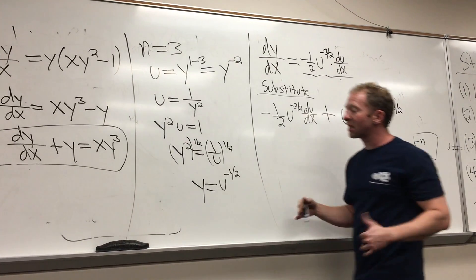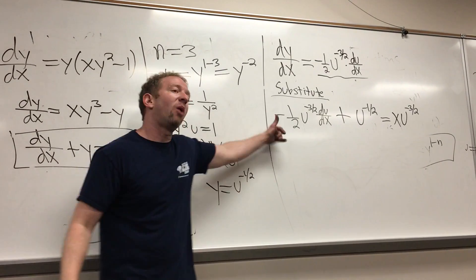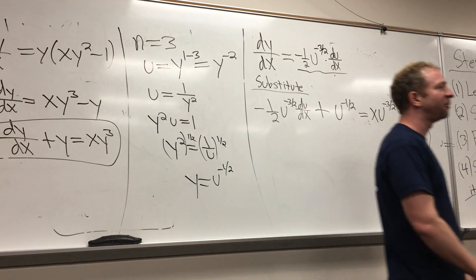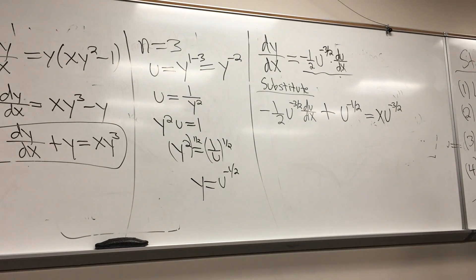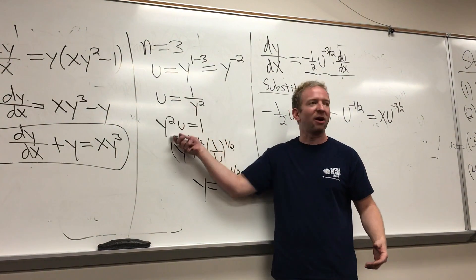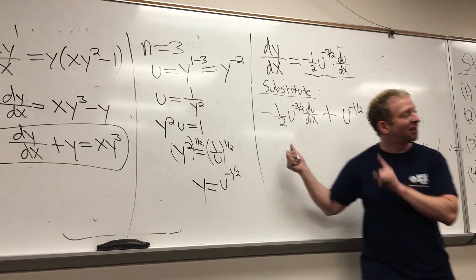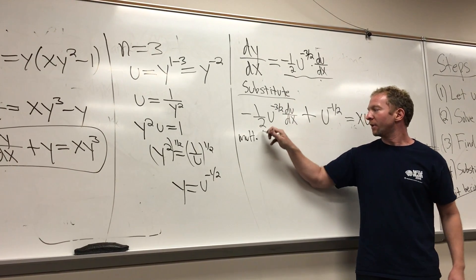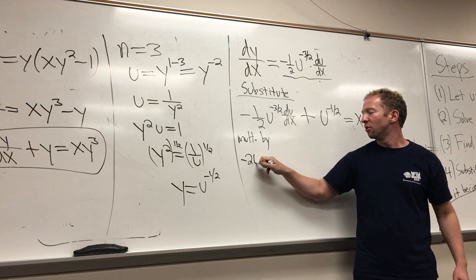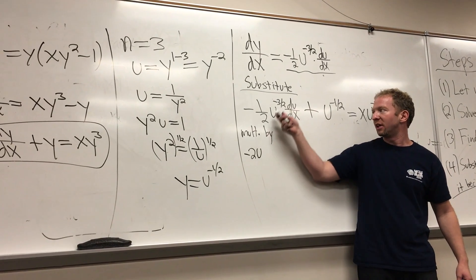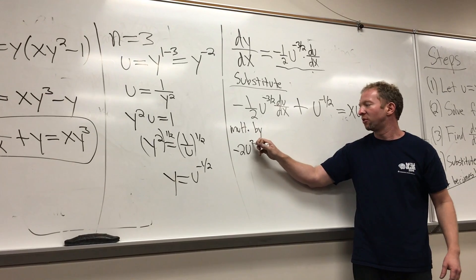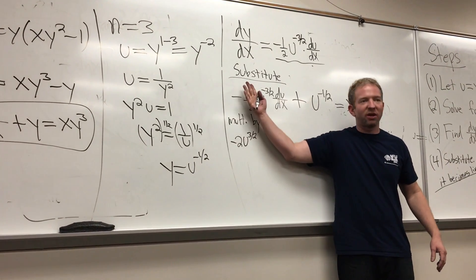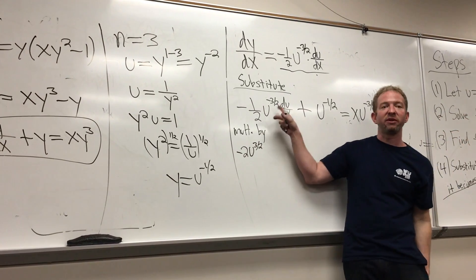Let me pause here. The next step is one where it's easy to make a mistake. To get rid of the u^(-3/2) term and make this linear, we're going to multiply by negative 2 · u^(3/2). The negative 2 is there to get rid of the negative 1/2, and multiplying by u^(3/2) is going to get rid of that term.